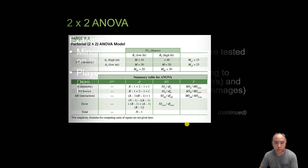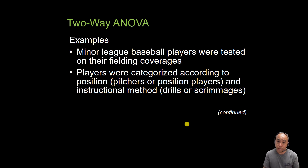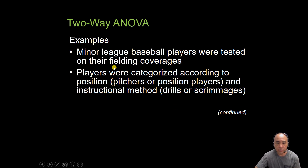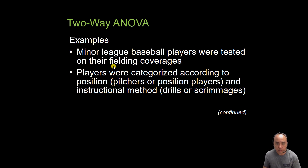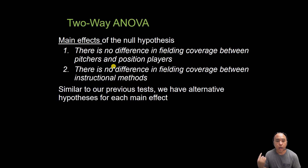Let's look at an example using baseball, which is my favorite sport. We've got baseball players being tested on their fielding coverage using a defensive skills test — the higher they score, the better their fielding coverage. Players were categorized by position, whether they're pitchers or position players — position players being any player that's not a pitcher — and by instructional method, whether they use drills or scrimmages. This is a 2x2 factorial ANOVA, not repeated measures.